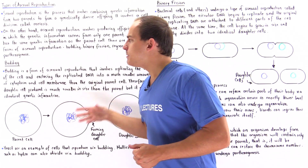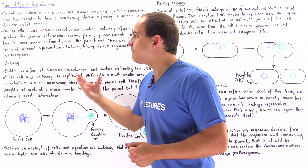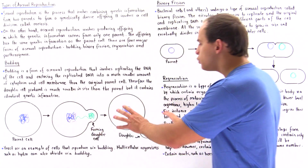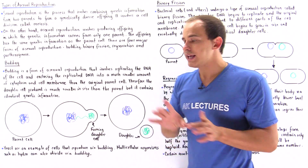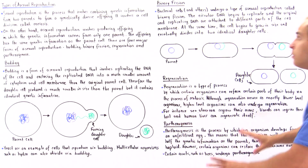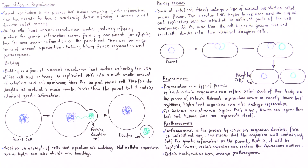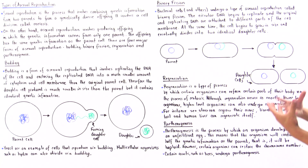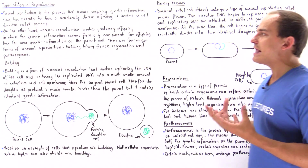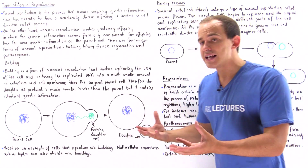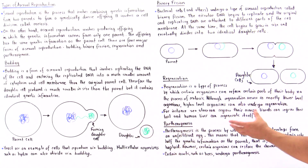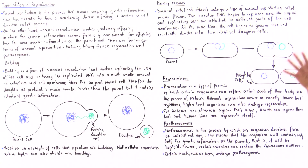Budding produces two cells that are unequal in size, whereas binary fission produces two cells that contain the same exact amount of cytoplasm and are therefore equal in size.